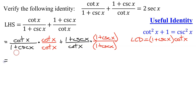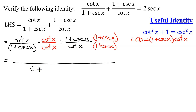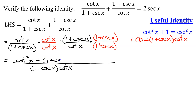Now both denominators are the same, so I can write everything over 1 plus cosecant of x times cotangent of x. In the numerator, I have cotangent of x times cotangent of x, which is cotangent squared x, plus 1 plus cosecant of x times itself — which I'll write out as 1 plus cosecant of x times 1 plus cosecant of x.